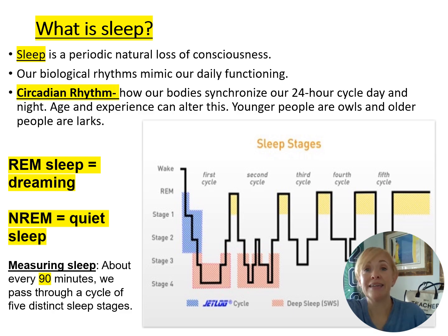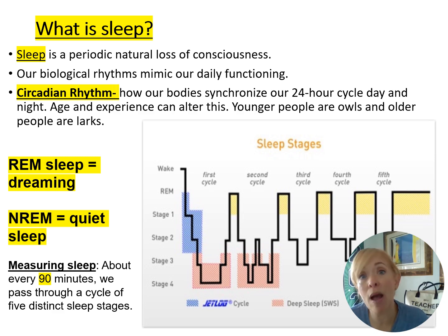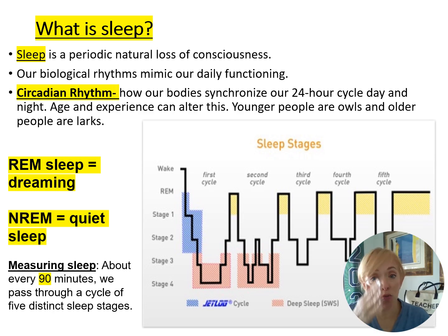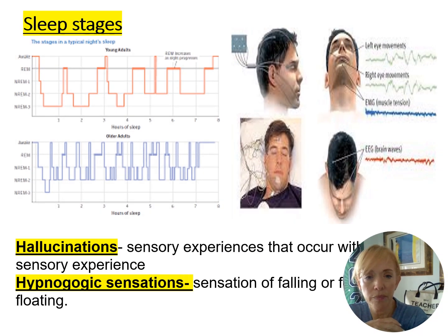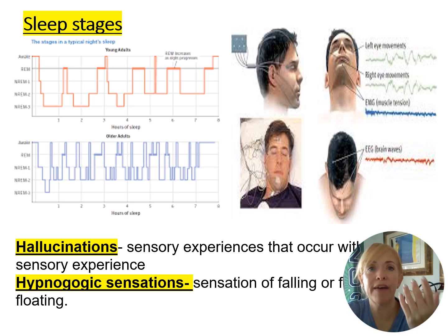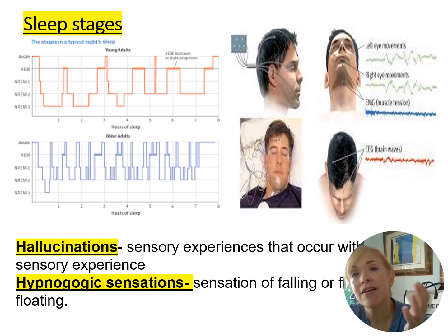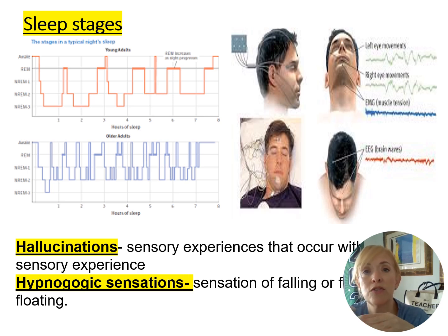REM stands for rapid eye movement — that's when you're dreaming. Non-REM is quiet sleep with no dreaming. Sleep cycles are about 90 minutes: stages one through four, then back up again. Hallucinations — sensory experiences without actual environmental stimuli — can occur during REM-related stages. Hypnagogic sensations, like feeling of falling or floating, are also common during the sleep cycle.